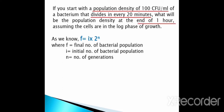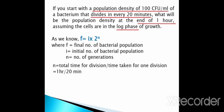The bacteria divides every 20 minutes, so the time taken for one division is 20 minutes, and we have to calculate the population density at the end of one hour. The number of generations n = total time / time per division = 1 hour / 20 minutes = 60 minutes / 20 minutes = 3. So the number of generations here is 3.